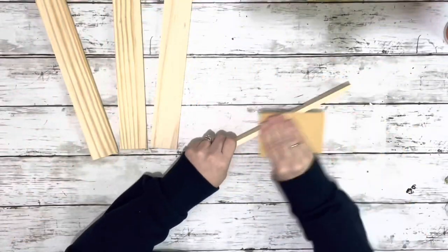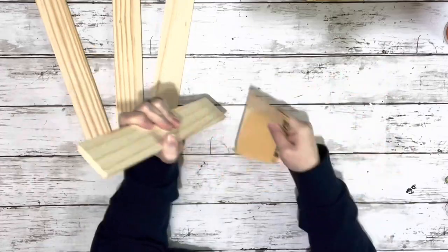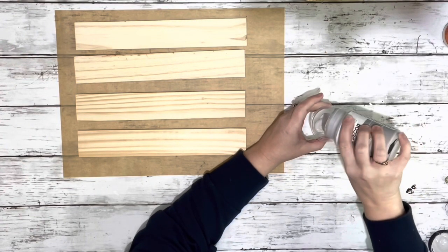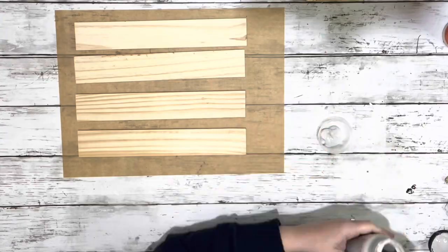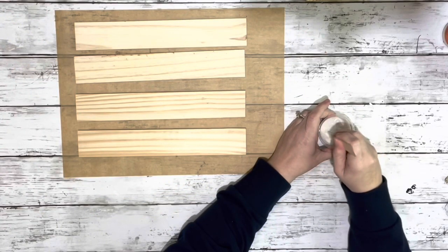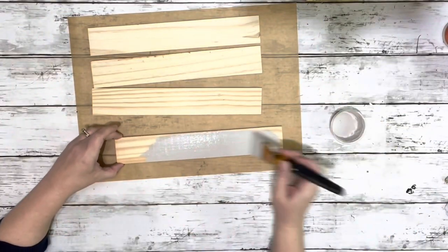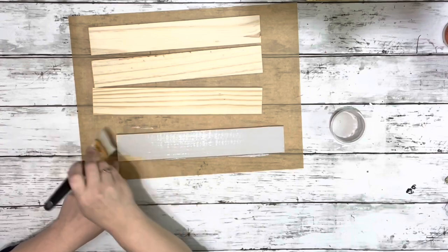Next thing I did was took the four pieces of wood from Dollar Tree and just gave them a quick sanding. Next I took the Parisian gray chalk paint and poured a little bit out in a little cup, poured some water in it to dilute it a little bit, mixed it up, and then spread it on the pieces of wood covering them entirely.